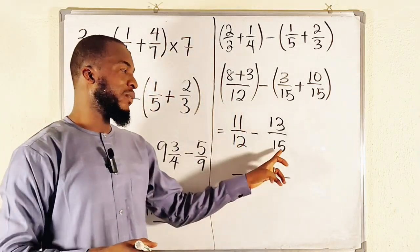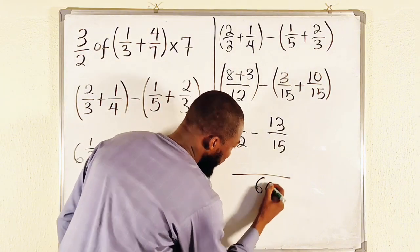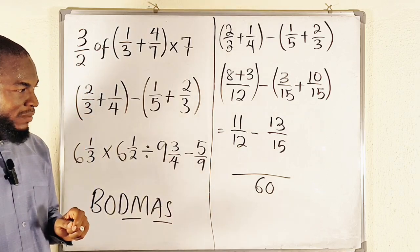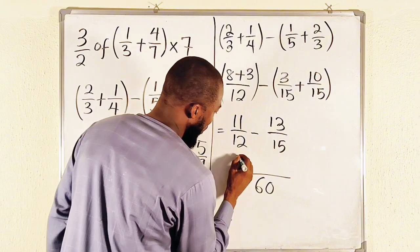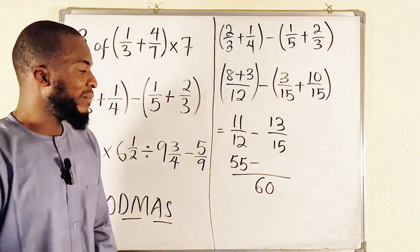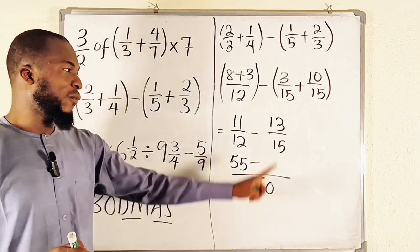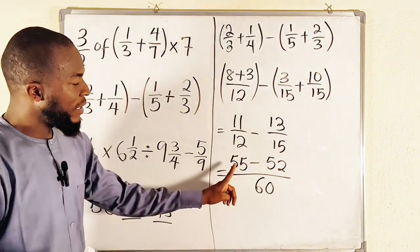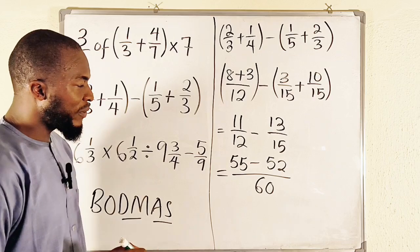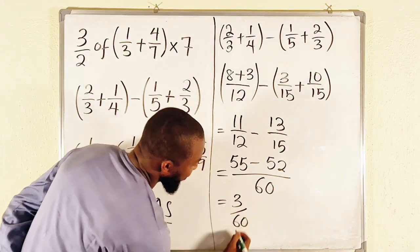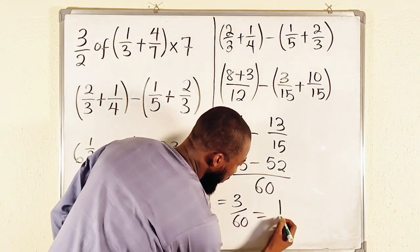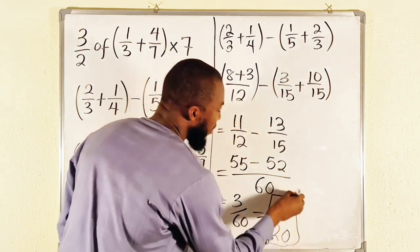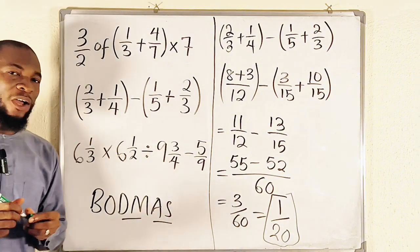We now have 11 over 12 minus 13 over 15. The LCM of 12 and 15 is 60. 12 goes into 60 exactly 5 times, and 5 times 11 is 55. 15 goes into 60 exactly 4 times, and 4 times 13 is 52. So we have 55 minus 52 equals 3 over 60. Dividing by 3: 3 into 3 is 1, and 3 into 60 is 20. Our final answer is 1 over 20.